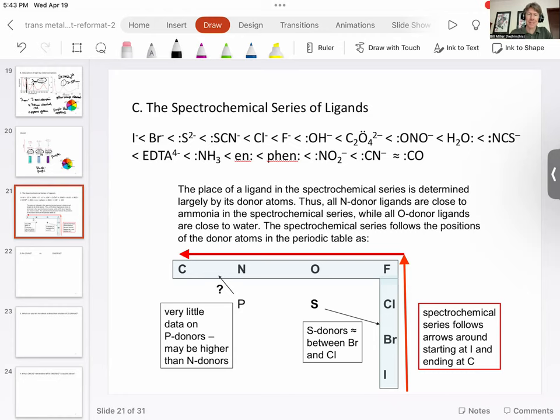This is a series going from iodine all the way to carbon monoxide and cyanide in which we are ranking, so over here is going to be the smallest delta zero, the smallest crystal field splitting energy, and over here is going to be the largest crystal field splitting energy. And if you notice, there is a definite trend.